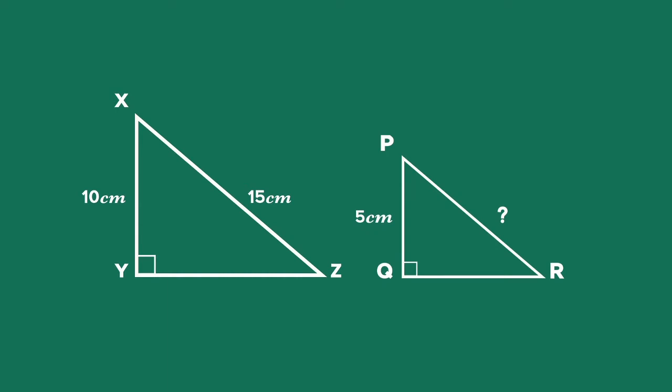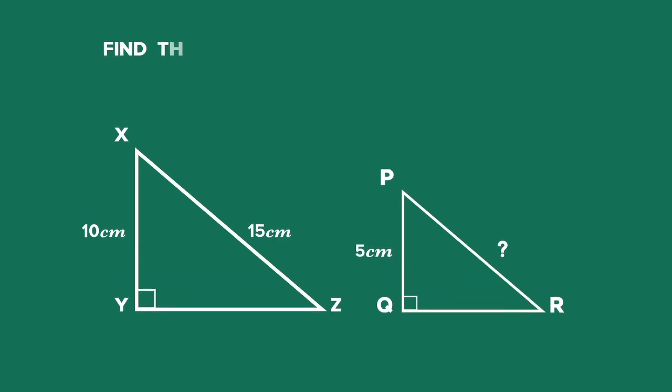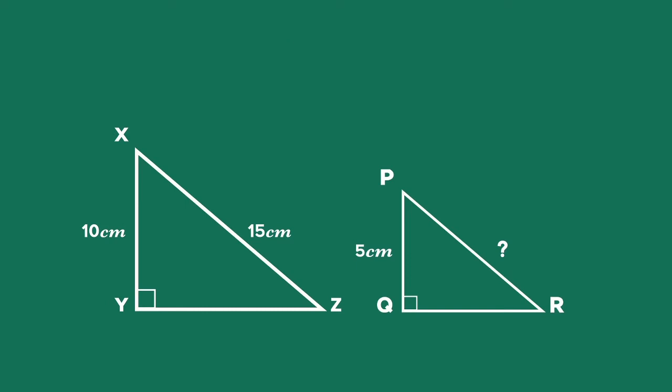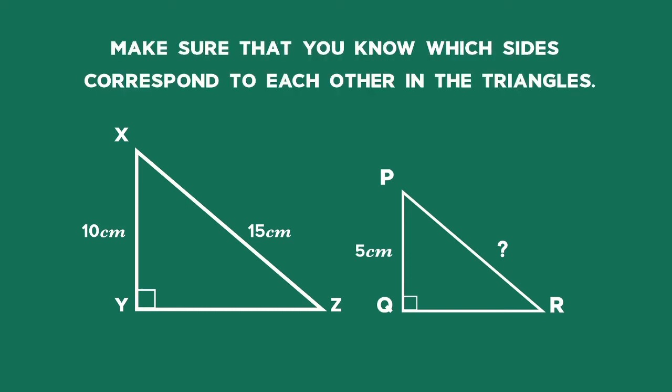Look at this example of two similar triangles XYZ and PQR. Find the length of the unknown side PR in the triangle PQR. Make sure you know which sides correspond to each other in the triangles.